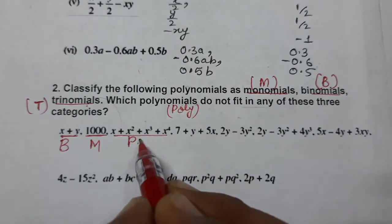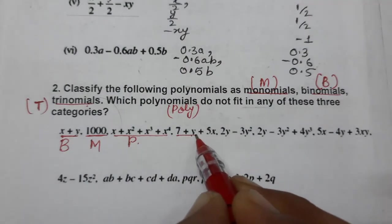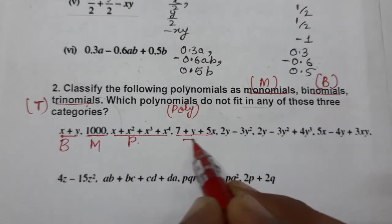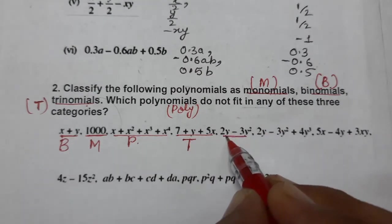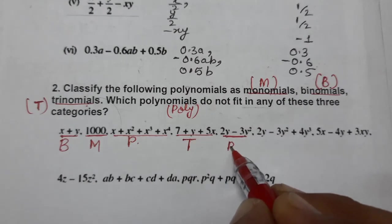Next one is 7 + y + 5x, three terms. So trinomial. 2y - 3y², two terms. So binomial.